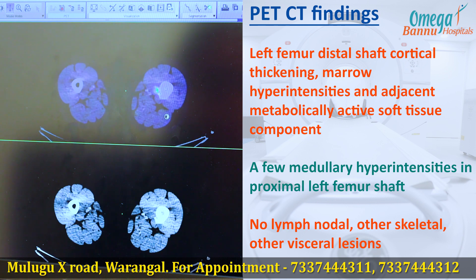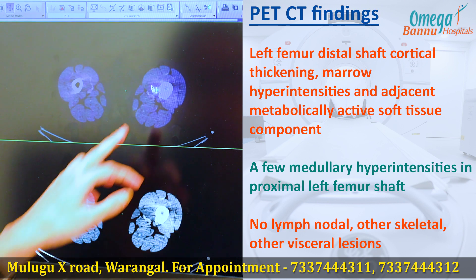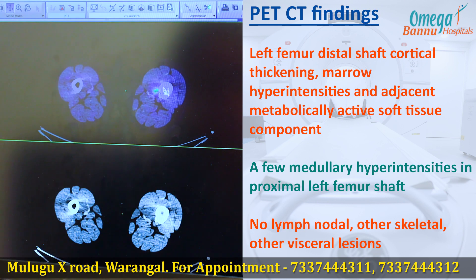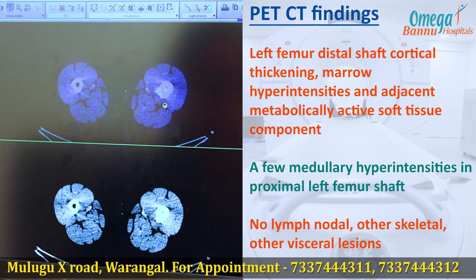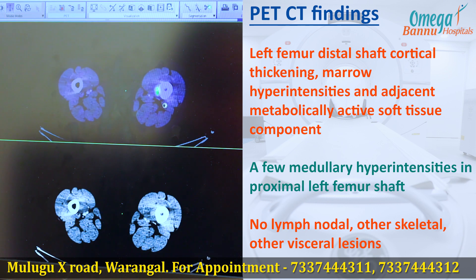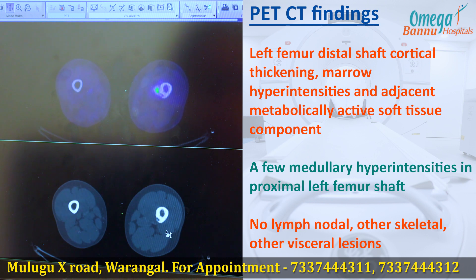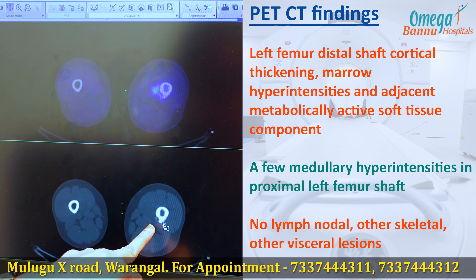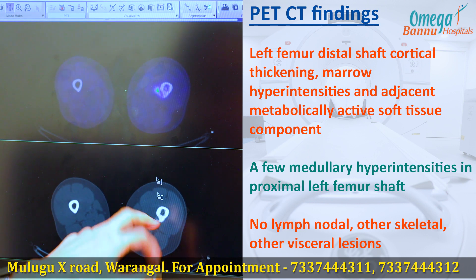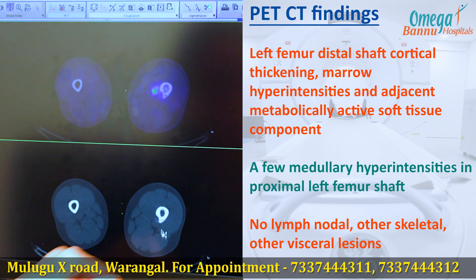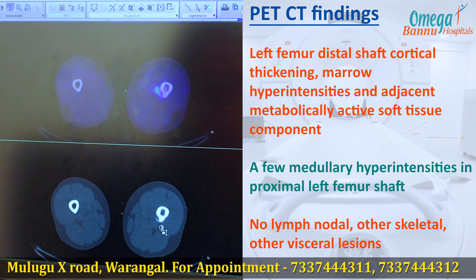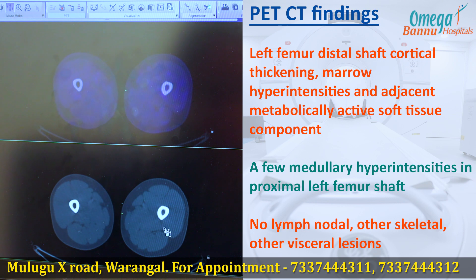we can see an irregular soft tissue lesion adjacent to the mid femoral shaft, showing increased FDG uptake along with bony changes in the form of cortical thickening and also hyperintensities in the medulla of the left femur.